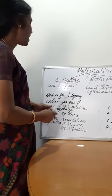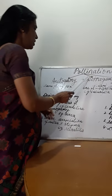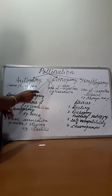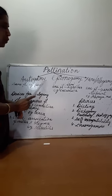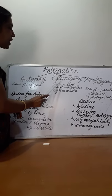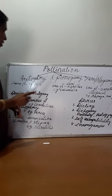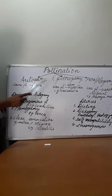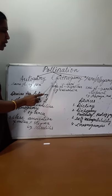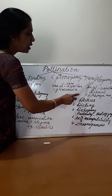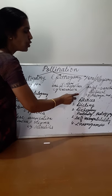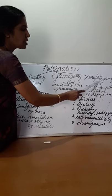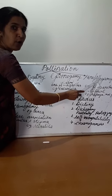Based upon that, pollination is classified into three types. One is autogamy, two is geitonogamy, and third is xenogamy, otherwise called allogamy.